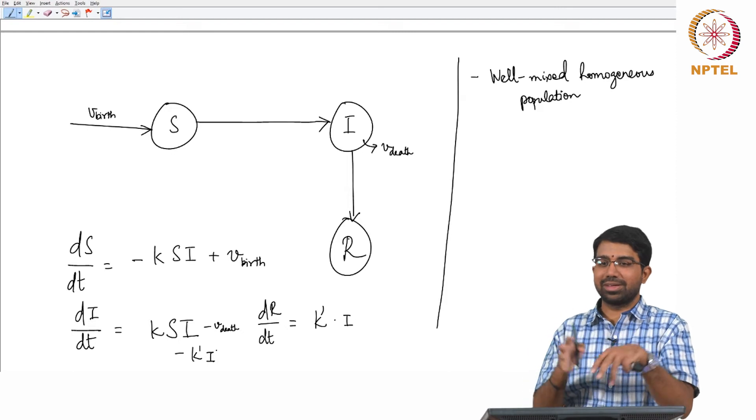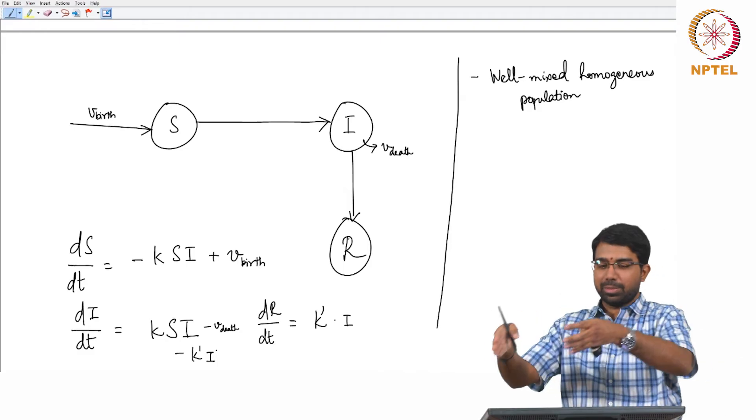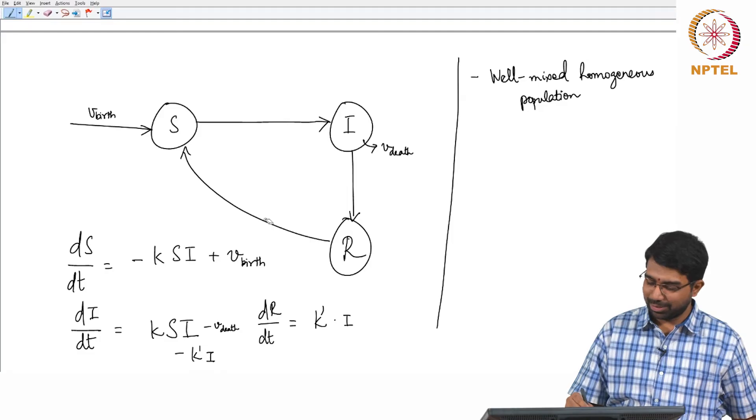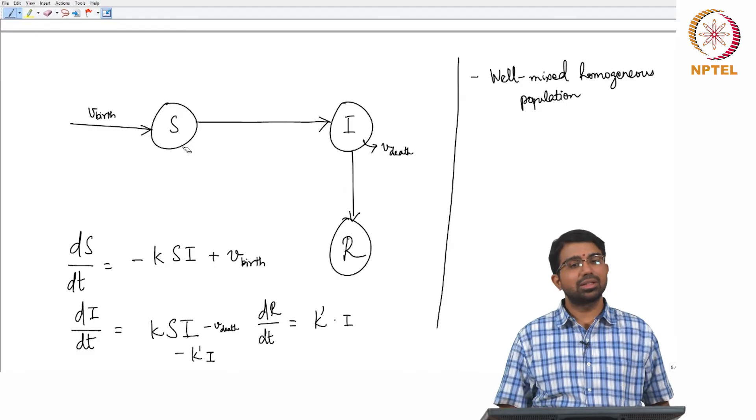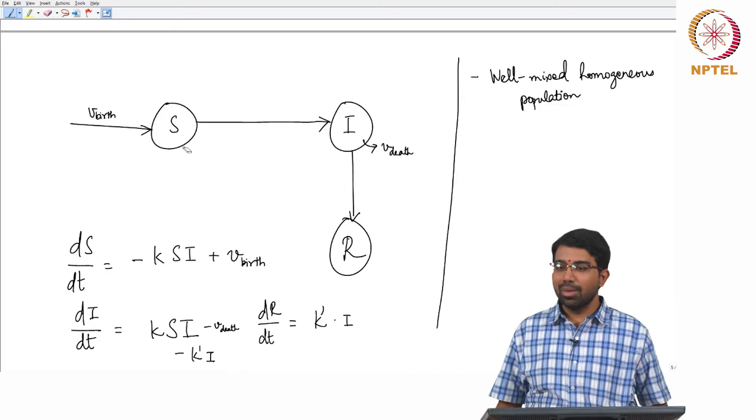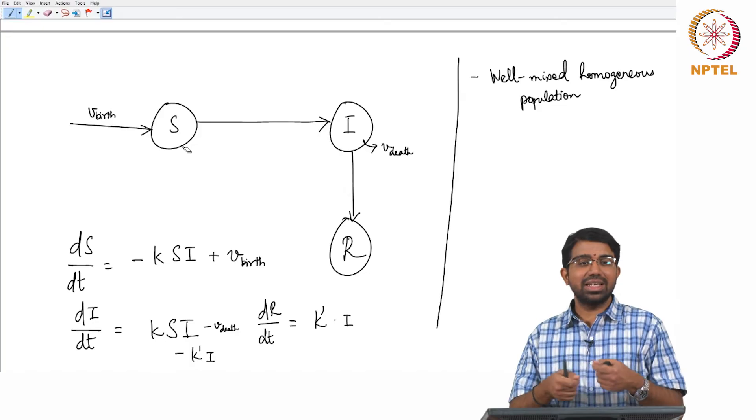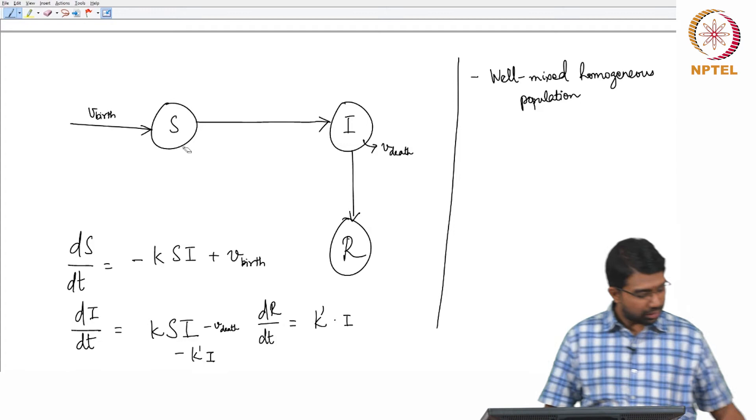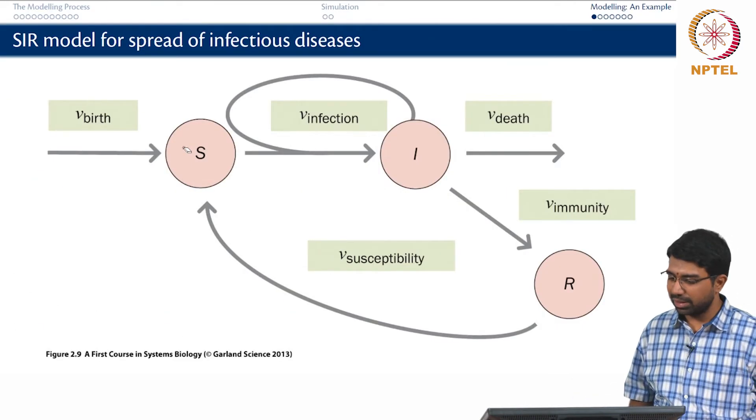Let us first write out what is dR by dt? Some k dash into I. This will again come here. There is some sort of a mass balance. So infected people become recovered or susceptible people become infected. Recovered people could become susceptible again. Let us not worry about all those complexities at the moment. There are different kinds of interactions that can happen essentially. We will try to look at this model in greater depth as we go on but this is just to kind of attract you to modeling because it is a very easily understandable model and you can immediately suggest a lot of improvements.